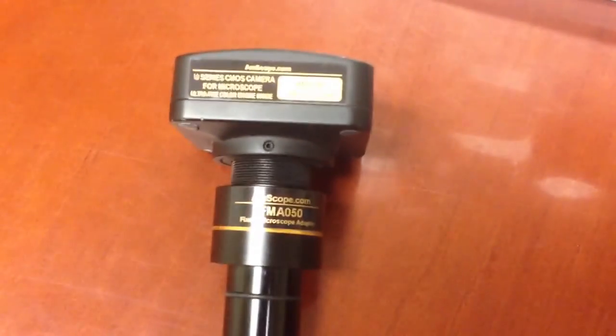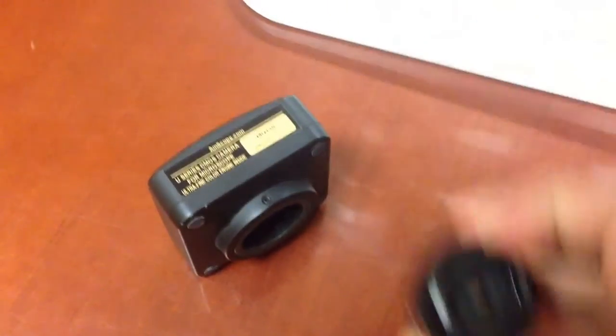Part B is unscrewing the reduction lens from the camera. And for video purposes, again, I already unscrewed it. So, just easily remove. There's the part. Then you get the head of the camera.